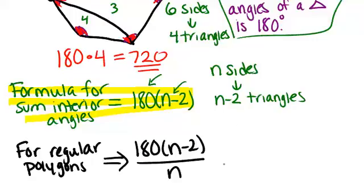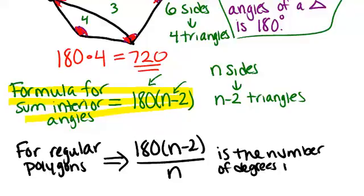So this formula is the number of degrees in each angle. The original formula we talked about was for the sum for all the angles. And if you know that all the angles happen to be the same, you can figure out what each one is.